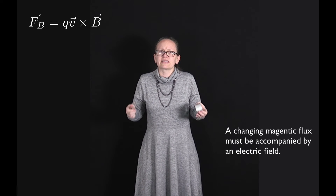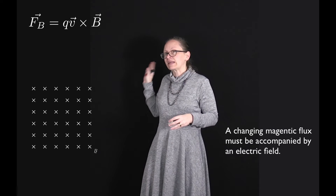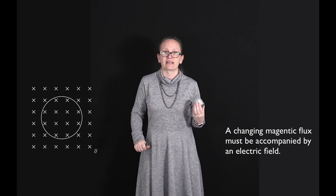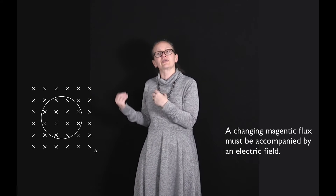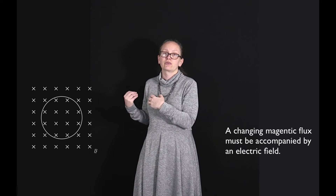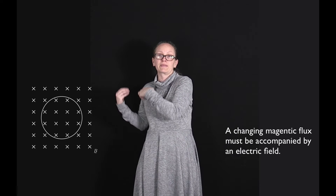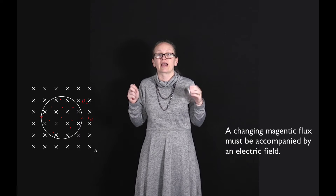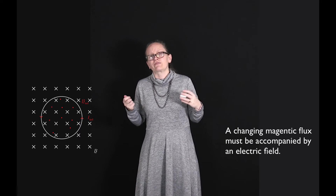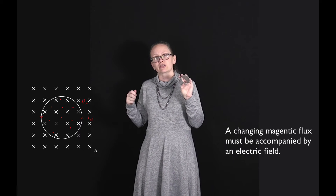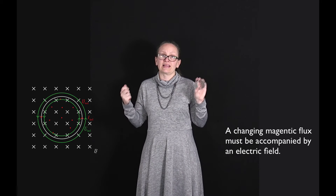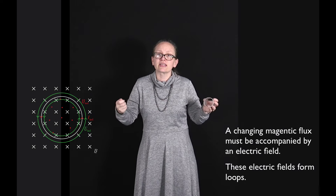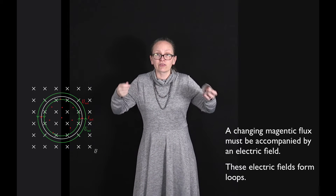Let's consider what this electric field is going to look like. Consider a magnetic field going into the screen that is increasing, and let's place a loop into that magnetic field. Because that field is increasing, we know we must have an induced current creating a field in the opposite direction — a magnetic field coming out of the screen. To do that, we need a current flowing in an anti-clockwise direction around our loop. The electric field that gets positively charged particles to flow in that anti-clockwise direction must itself loop around in that anti-clockwise direction. So a changing magnetic field induces electric fields which form loops.